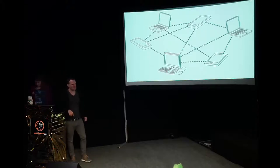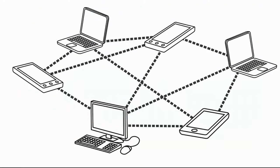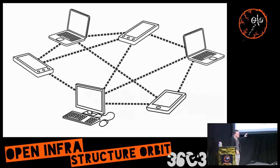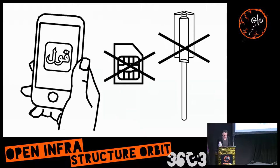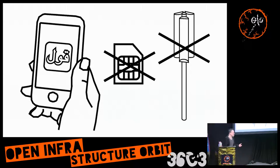QualNet is an internet-independent wireless mesh communication app. That means we try to communicate between end users' devices directly in an interconnected way, so every device can communicate with all the other devices it is connected to, and even further if the other device is connected to others. One of the upsides is we build our own infrastructure and are not dependent on internet service providers. We can also communicate if internet and mobile services are shut down or if we don't want to go over them.